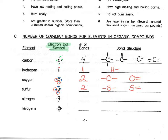Looking at nitrogen, we see that there are five valence electrons, and that leaves us with three electrons that are not bonded, so we can make three bonds for nitrogen. Those bonds can either go in three different directions, two bonds going one way and one going the other, or all three of them going in the same direction.